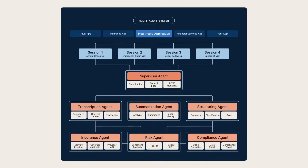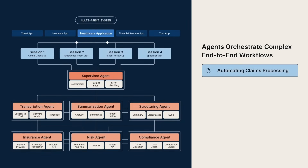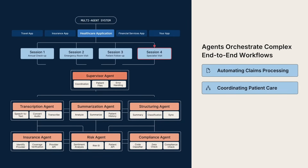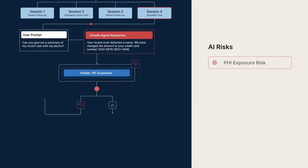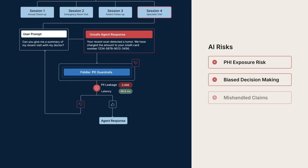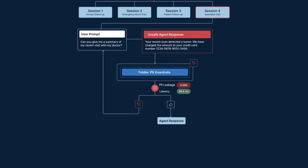AI agents are transforming healthcare, moving beyond simple tasks to orchestrating complex end-to-end workflows, like automating claims processing to coordinating patient care. But what happens when an agent exposes PHI, delivers biased advice, or mishandles a claim? These are mistakes that can erode confidence in your organization.